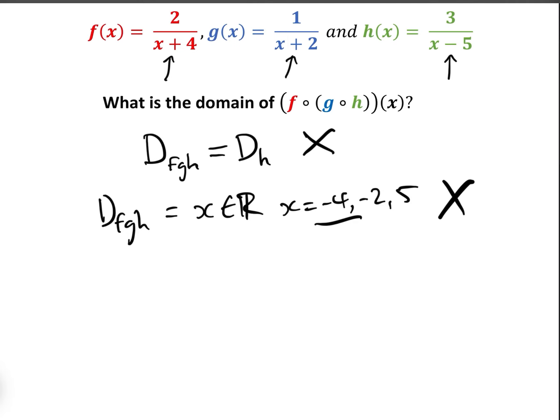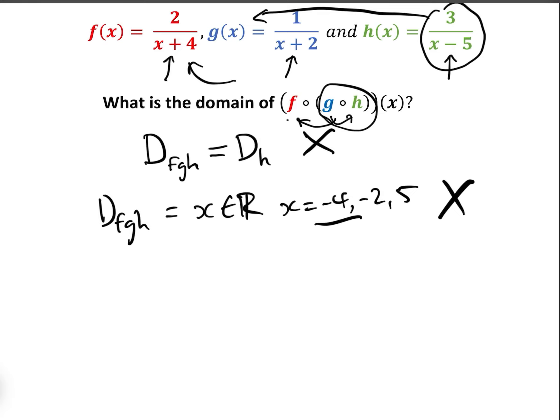So let's have a look at what the actual answer is. g∘h means we put h(x) into g(x), and then we put the composite g∘h(x) into f(x). When it asks for the domain, it's asking: what values of x does this make sense for?